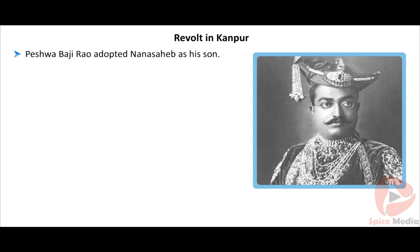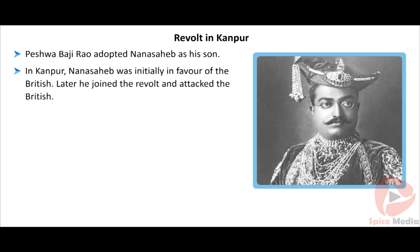Spread of the revolt: In May 1857, there was an open revolt by the sepoys in Meerut. Prisons were broken open and imprisoned sepoys were freed. Gradually, the revolt spread to Lucknow, Bareli, Kanpur, Agra, Jansi, Benares, Bundelkhand, and Central India. Kanpur, Delhi, and Lucknow were the three main cities where the revolt was centred. Rani Lakshmibai, Tantya Tope, Nana Sahib, and Kunwar Singh were prominent leaders of the revolt.